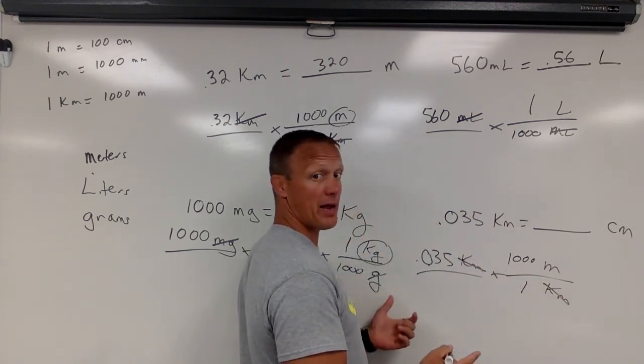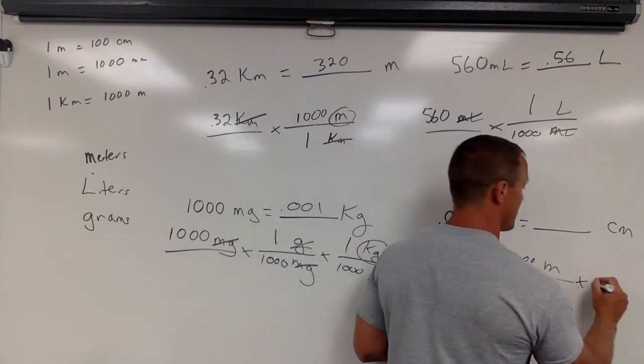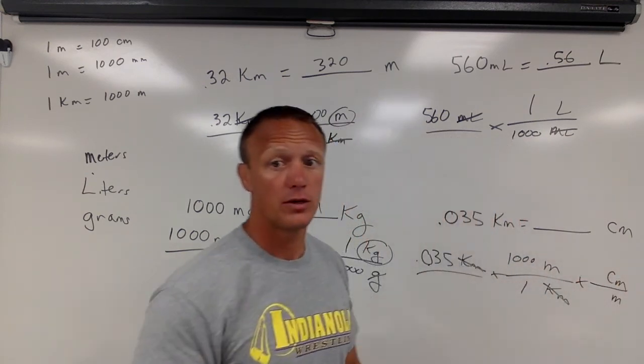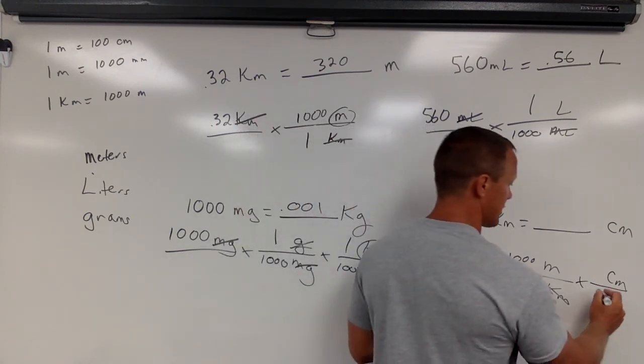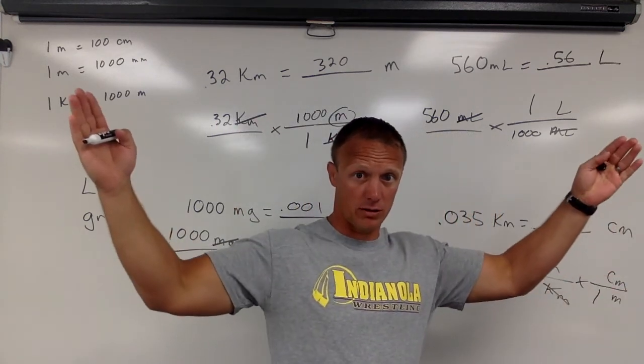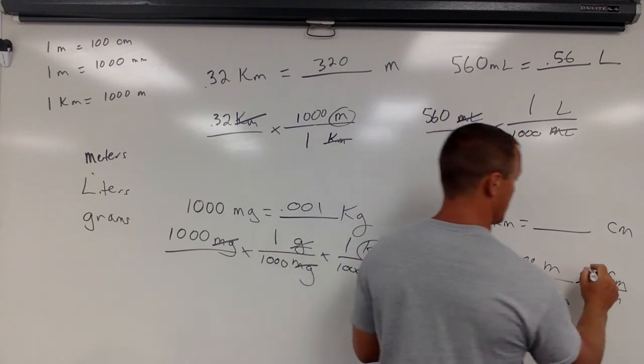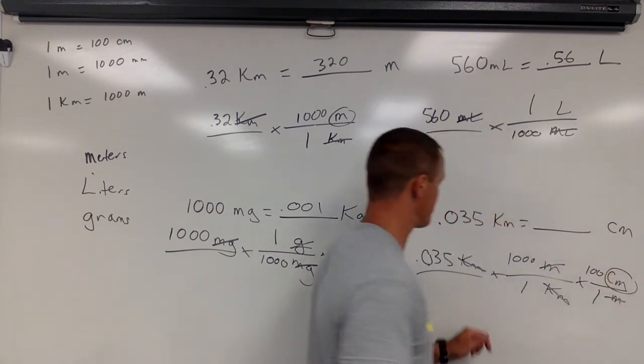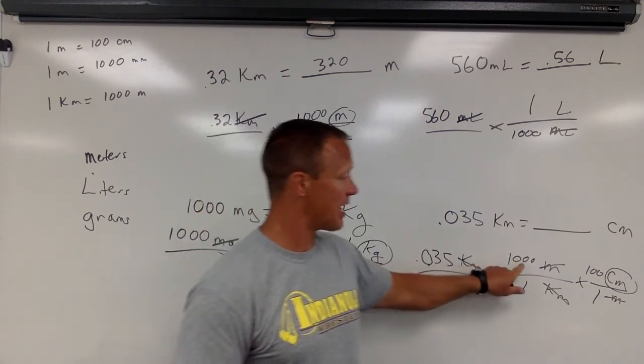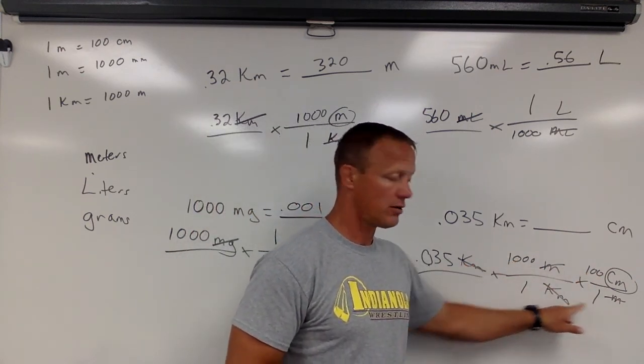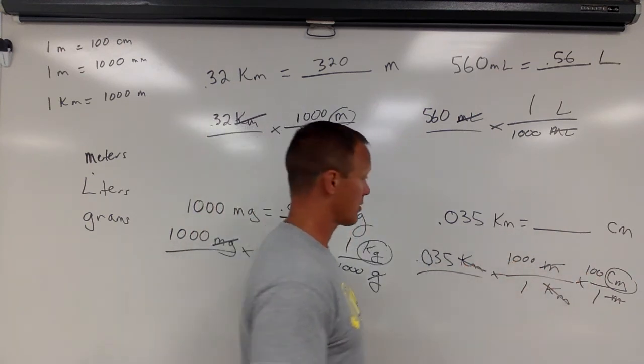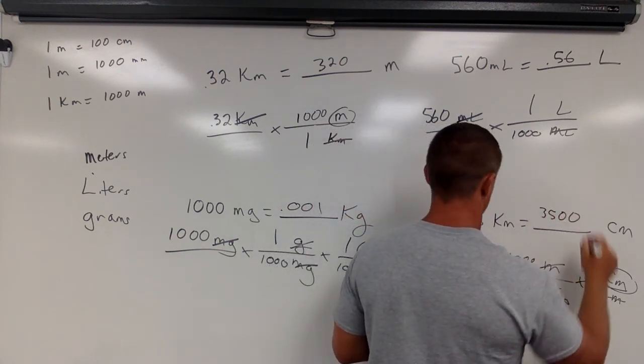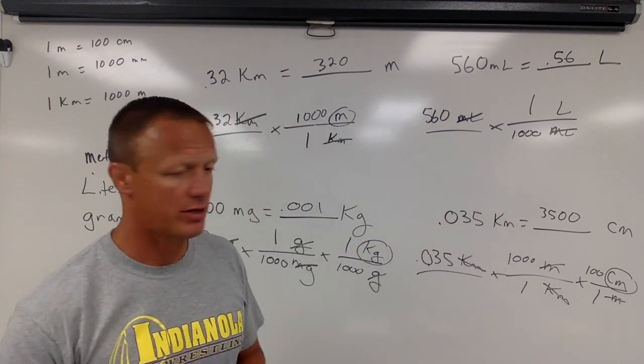If I stop right now, my answer would be meters. I'd multiply those into meters. I want centimeters, so I'm going to say meters to centimeters. A meter stick, this long, contains 100 little centimeters. Then we can cancel. Again, 0.035 times 1,000 times 100. It's all ones in the bottom. So we're going to have 3,500 centimeters.